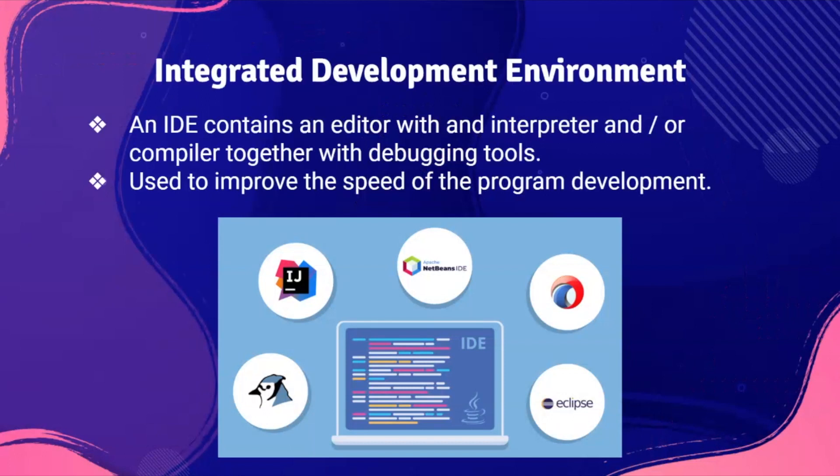Most high level programming languages offer the use of an IDE for program development. This contains an editor with an interpreter and/or compiler together with debugging tools, which can improve the speed of program development. The image below shows some examples of high level languages that provide an IDE.